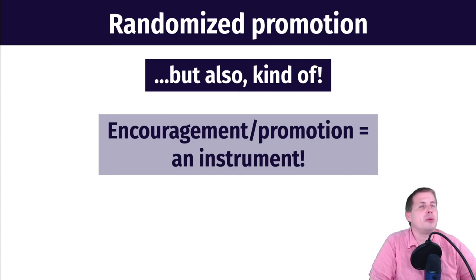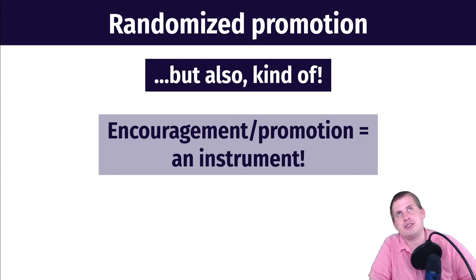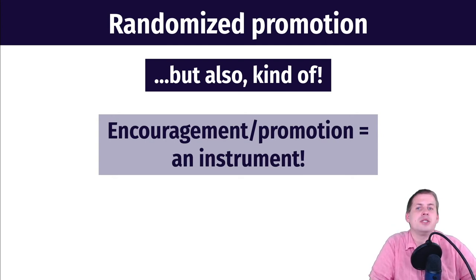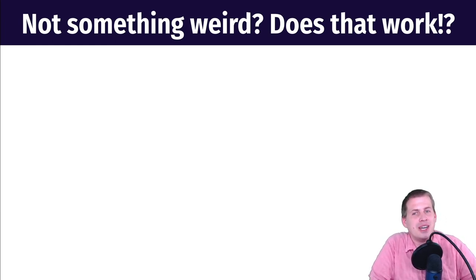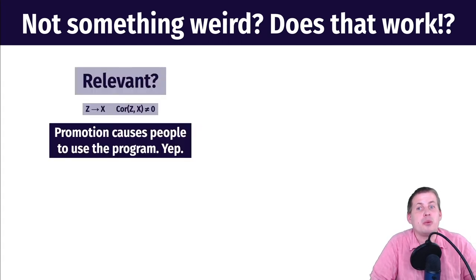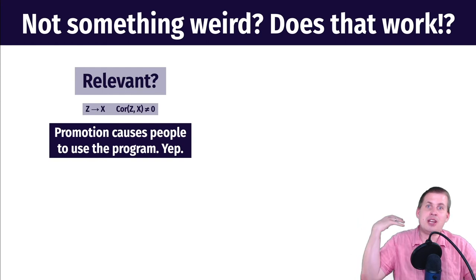This is a bit odd because one requirement for an instrument is that it needs the 'huh factor' — the weirdness factor, like the scrabble score example. Being randomly assigned to promotion doesn't feel like a weird instrument, but it does work. Looking at the three qualifications: first, relevance — getting random promotions should cause people to use the program, to go vote, which is the case. If you randomly go to people's houses and say 'you should register,' that's going to help them register.